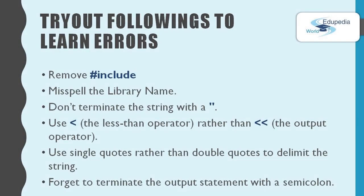Now you know how to use NetBeans to write C++ code. Now try out the following things on your code: first, remove the #include line; then misspell the library name; then don't terminate the string with a quotation mark; use the less-than operator rather than the output operator; use single quotes rather than double quotes; and finally see what would happen if you remove the semicolon. Each of these small errors is an example of a kind of mistake we often make, so try to find out what happens when you make them.